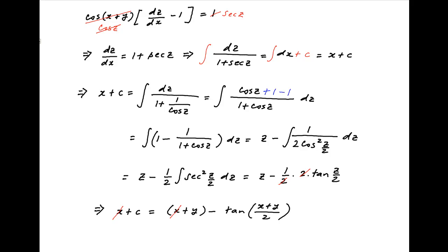x cancels across the left-hand side and the right-hand side. And we therefore get y minus tan of x plus y upon 2 equals c. Which is the required solution.